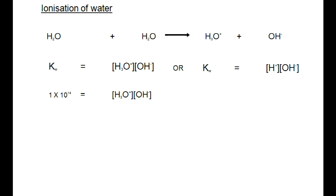If we look at the ionization of water, we realize that two H2O molecules undergo ionization very slightly, where water reacts with water to form an acid-base reaction where H3O+ ions and OH- ions are formed. This is a reversible reaction. Because the Kc value is very small, most of the reaction lies on the water side and very few H3O+ and OH- ions are formed.